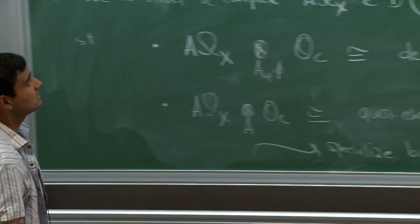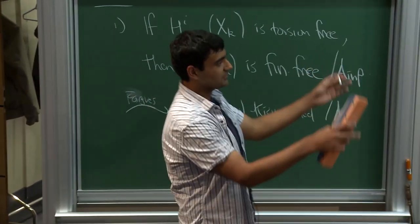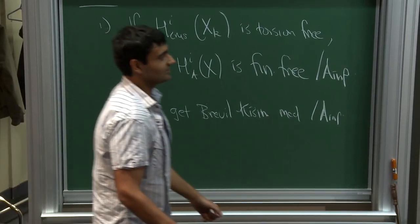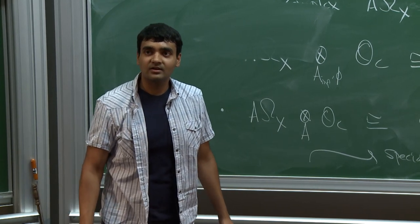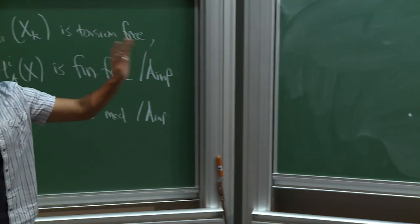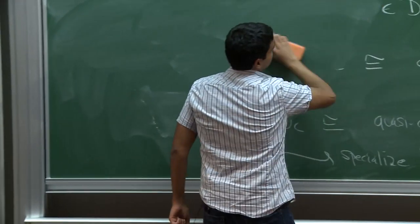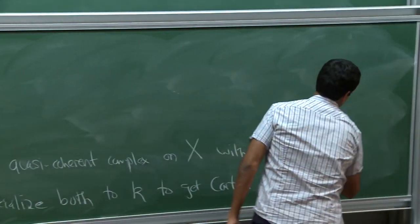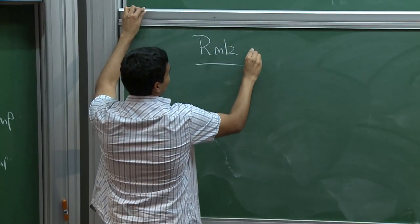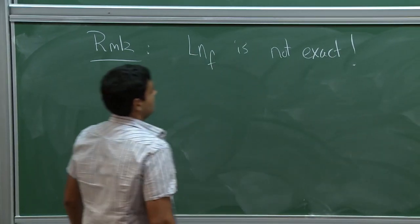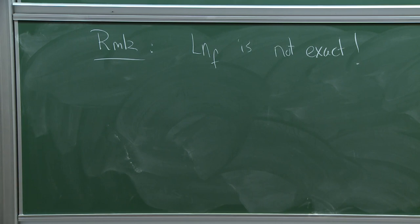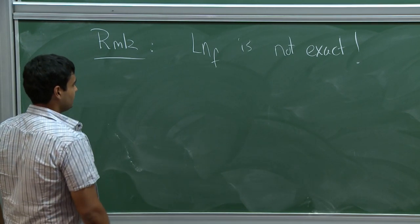The theorem is that this recipe passes to the derived category. Applying it to flat replacements gives a functor from D(A) to D(A), which I'll call L-eta with respect to F. The remark I want to make is that this functor is not exact — it's a functor between triangulated categories but doesn't take short exact triangles to exact triangles. Here's why with an easy example. Take A = Z_p and F = p. Consider the complex K = Z/p placed in degree zero. This is quasi-isomorphic to the two-term complex Z_p ->(×p)-> Z_p. When you apply L-eta_p, you get 1/p · Z_p mapping by p to Z_p, which is quasi-isomorphic to zero.